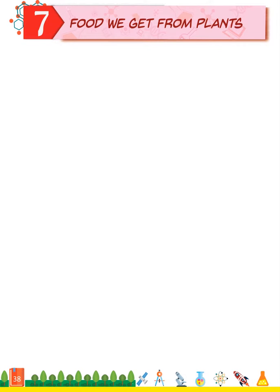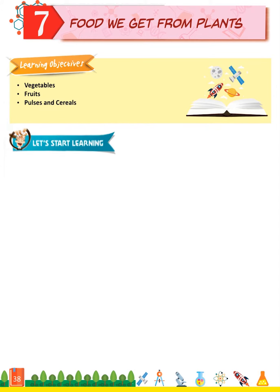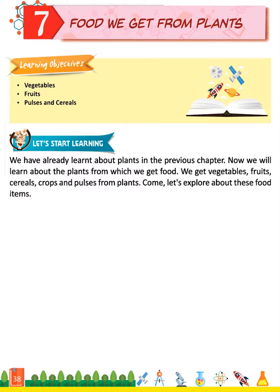Let's start Lesson 7: Food We Get From Plants. Learning Objectives: Vegetables, Fruits, Pulses and Cereals. Let's start learning. We have already learnt about plants in the previous chapter. Now we will learn about the plants from which we get food. We get vegetables, fruits, cereals, crops and pulses from plants. Come, let's explore about these food items.